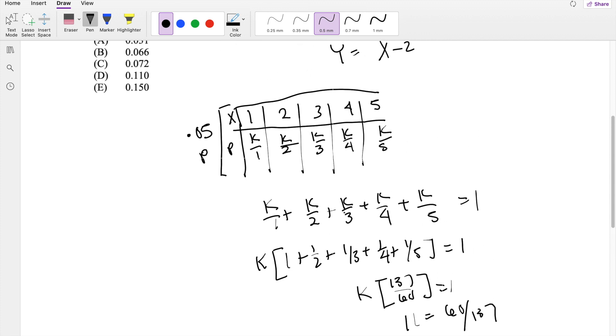So we can rephrase all these probabilities as 60 over 137, 60 over 137 times 2, and so on.